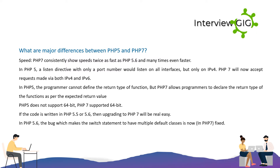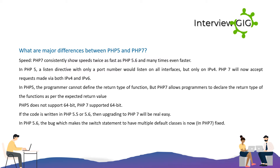PHP 5 does not support 64-bit, while PHP 7 does support 64-bit. If code is written in PHP 5.5 or 5.6, upgrading to PHP 7 will be very easy. In PHP 5.6, there was a bug that allowed the switch statement to have multiple default clauses; this has been fixed in PHP 7.